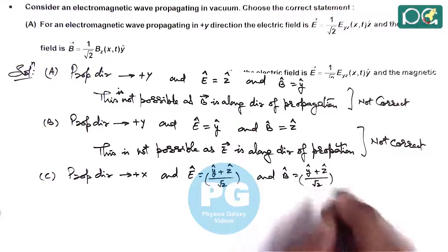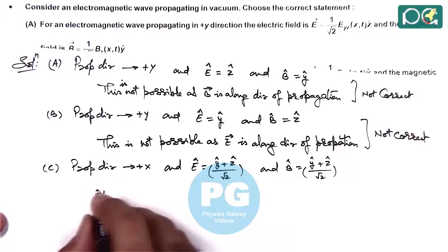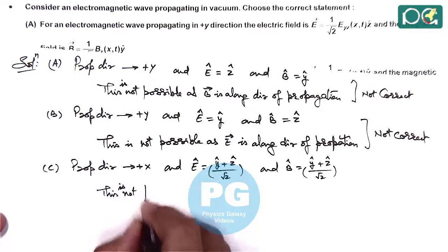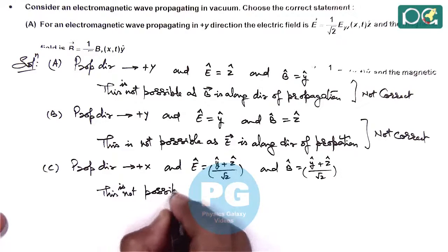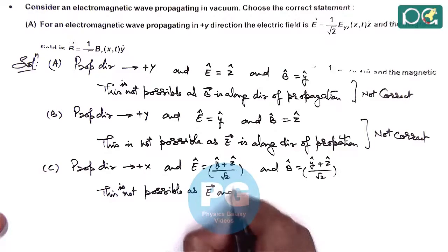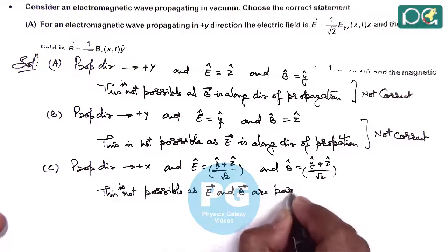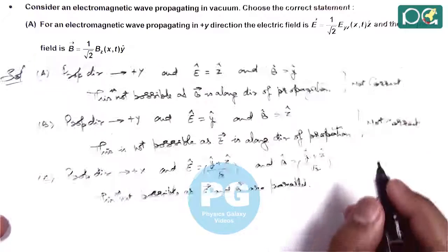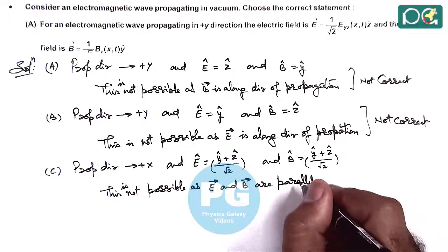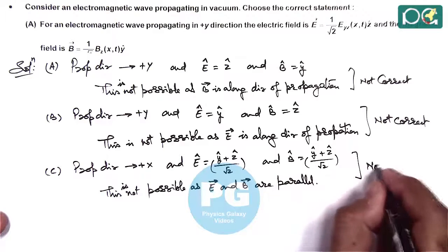Both of these are perpendicular to the x direction, but this is also not possible, as E vector and B vector are parallel. As we already discussed, in an electromagnetic wave the electric and magnetic fields must be perpendicular to each other — their dot product must be zero. So option C is also not correct.